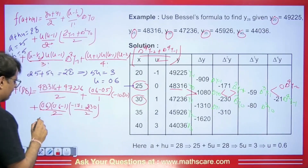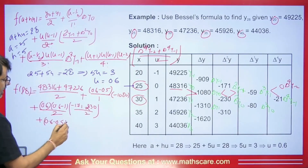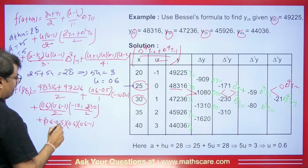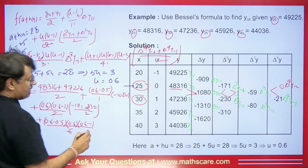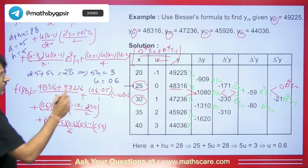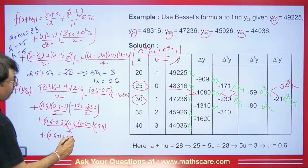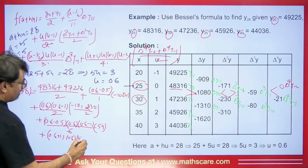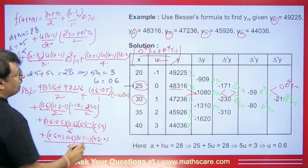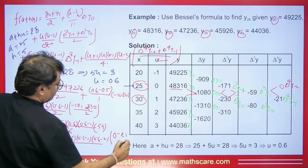Then we have the next term: (U minus 1/2) times U times (U minus 1) upon 3 factorial — that is 0.6 minus 0.5, then 0.6, then 0.6 minus 1, divided by 6 — times del cubed Y minus 1, which is minus 59. The next term has (U+1)(U)(U minus 1)(U minus 2) divided by 24, where the average gives 0 plus minus 21 divided by 2.